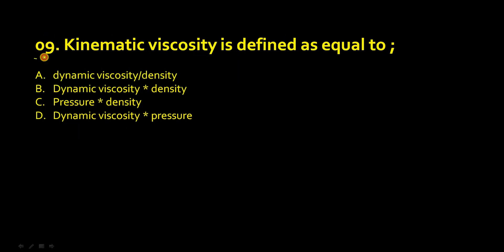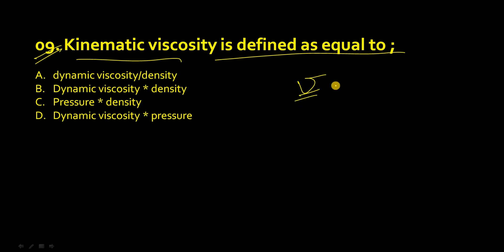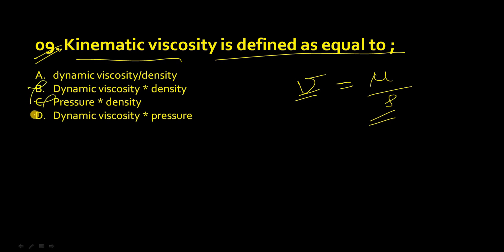The ninth question — very simple: kinematic viscosity, denoted by nu, is defined as what? It is the ratio of dynamic viscosity to density. So option A — dynamic viscosity to density — is the right answer.